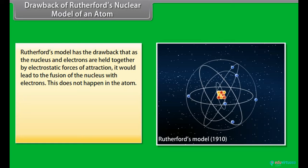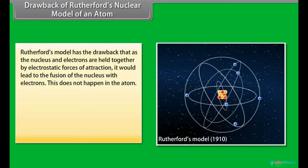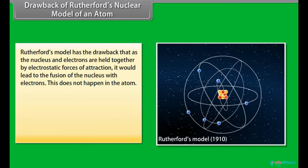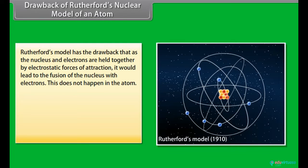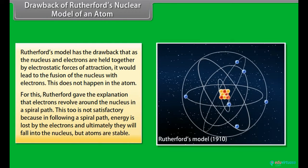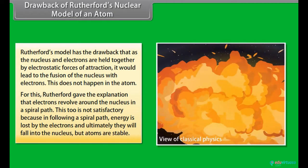Drawback of Rutherford's Nuclear Model: Rutherford's model has the drawback that since the nucleus and electrons are held together by electrostatic forces of attraction, it would lead to the fusion of the nucleus with electrons. To address this, Rutherford proposed that electrons revolve around the nucleus in a spiral path. However, this is not satisfactory because in following a spiral path, energy is lost by the electrons and ultimately they would fall into the nucleus — yet atoms are stable.